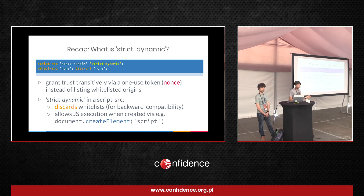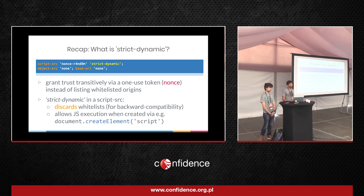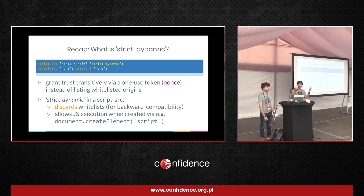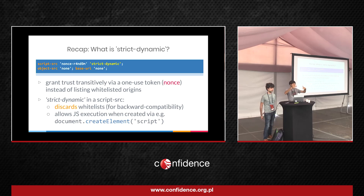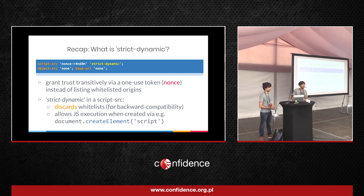We worked together with Chrome folks and the W3C people and added a keyword called strict-dynamic. The idea is: if a script tag on the page has a nonce, it's already trusted by the developer. So if that script tag creates new script tags, they will be transitively blessed by the browser — you can propagate trust to child scripts. This is very convenient because suddenly you can use a nonce policy with strict-dynamic with almost no refactoring on the page. This is what we did at Google very successfully.